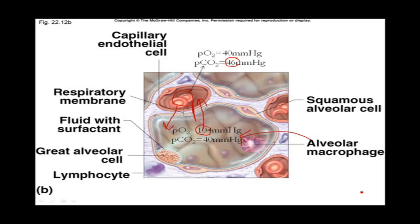By the time that blood leaves the pulmonary capillary into the pulmonary venules and veins, it's going to have a partial pressure of CO2 of about 40 millimeters of mercury because there's enough air in the alveoli to absorb a lot of CO2. So when we exhale, we exhale a lot of CO2 — the waste product we're trying to get rid of, pulled from the bloodstream. This is an example of external respiration, so called because it takes place in the lungs, which come in contact with external air.